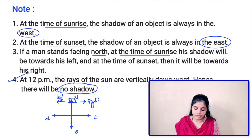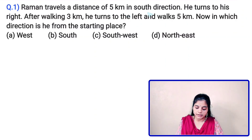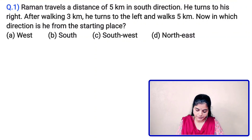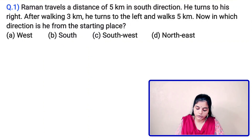You should remember these four points. Consider the first question: Raman travels a distance of 5 km in the south direction. He turns to his right, and after walking 3 km, he turns to the left and walks 5 km. In which direction is he from the starting place? Option A: west, Option B: south, Option C: southwest, Option D: northeast.